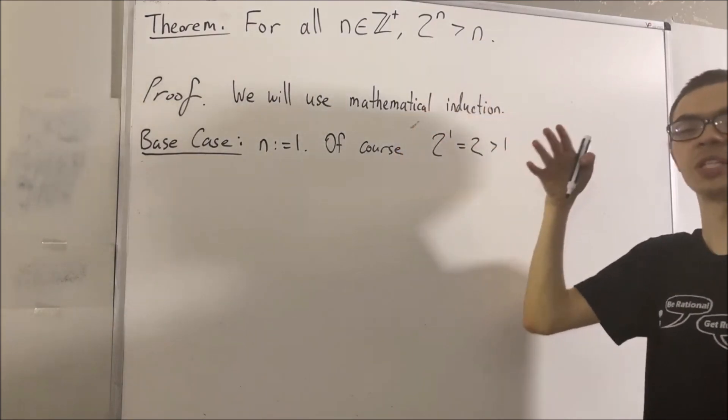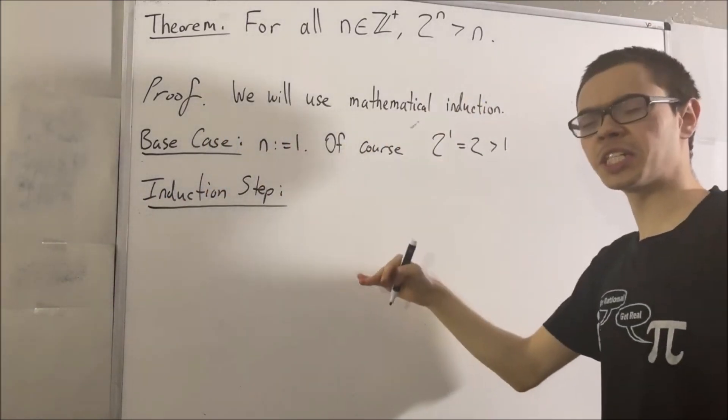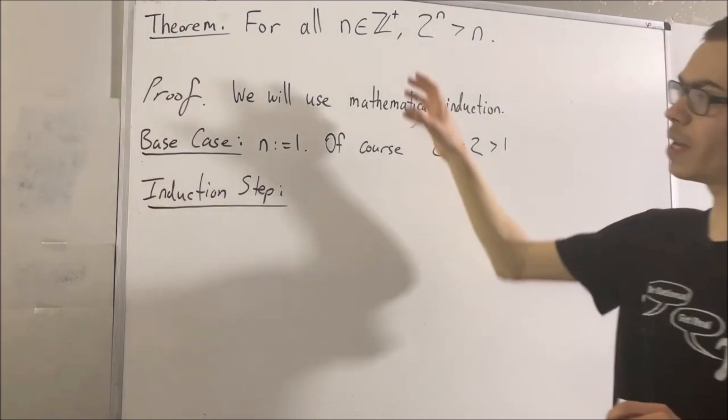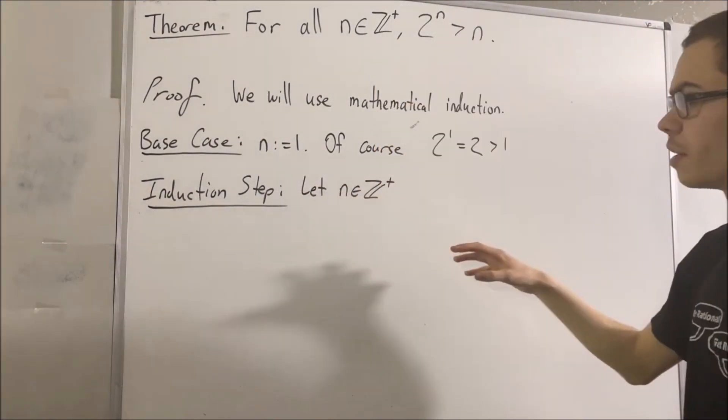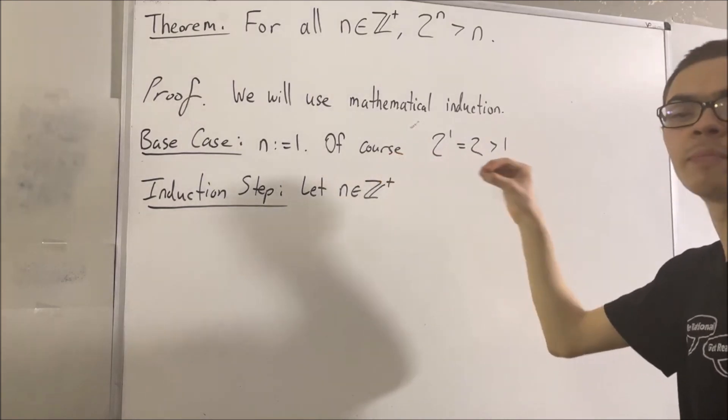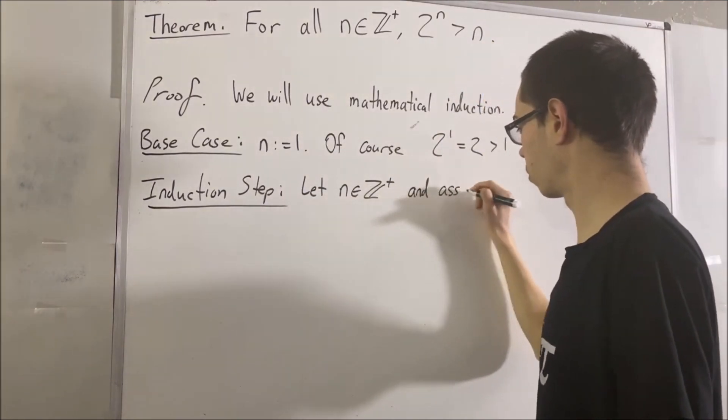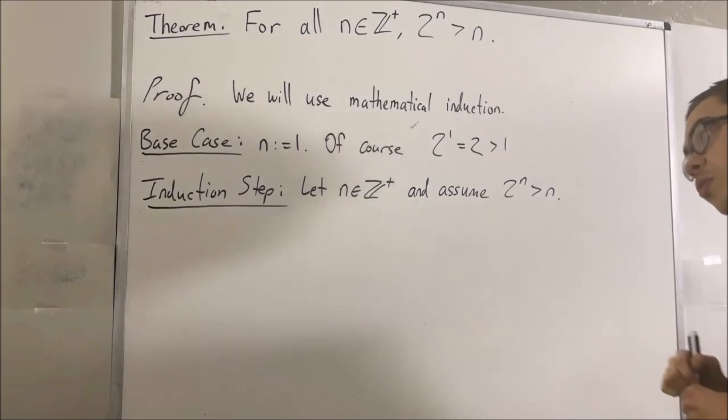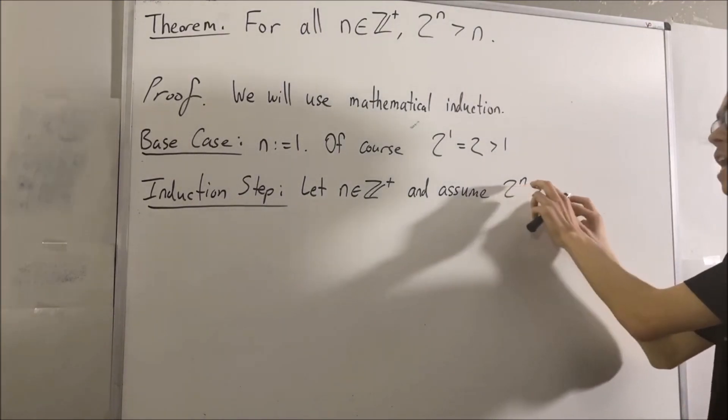Now let's move on to the induction step. Now, if you recall, in the induction step, what we do here is we pick out an arbitrary positive integer n. And we assume that this arbitrary positive integer n that we picked out is one where this happens to be true. And our whole goal now is to prove that this is also true if instead of n, we have n plus 1.